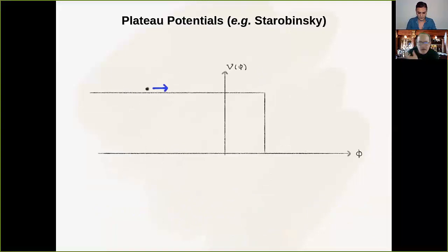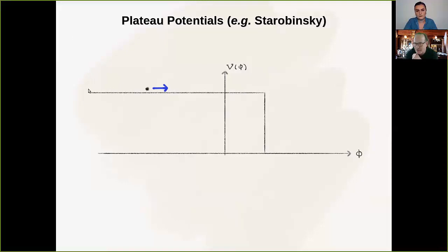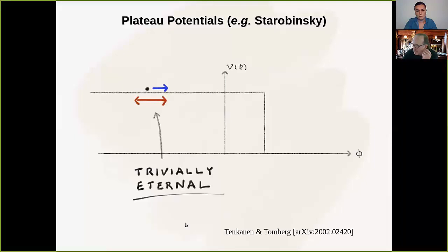Another case favored by the data is a plateau potential — like a top hat extended infinitely in one direction, a blocky equivalent of a Starobinsky model. These are trivially eternal: with an infinite plateau, there's infinite space to fluctuate, so you're basically always in eternal inflation regardless of the height of the potential. A recent paper by Tommy and collaborators gives a nice treatment of stochastic evolution on these plateau potentials.